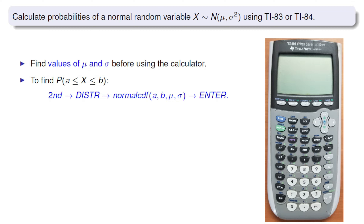After you find those values, you can find the probabilities as follows. To find the probability for a less than or equal to X less than or equal to b, press 2nd, go to DISTR, and choose normalcdf. There are 4 entries: you put the lower limit as a, the upper limit as b, the mean as mu, and the standard deviation as sigma. After you input all those values, click enter. This gives you the probability for X to be between a and b.